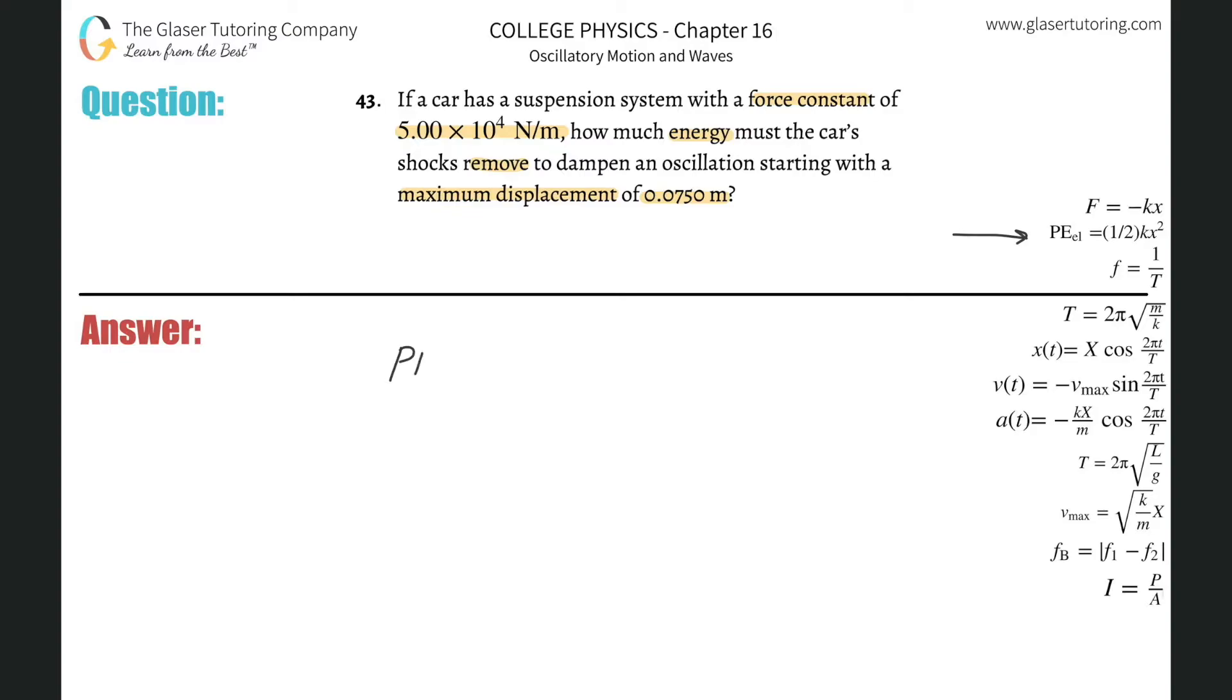it tells us that the potential energy, the elastic potential energy inherent in the spring, is equal to one-half multiplied by the force constant multiplied by its displacement from equilibrium squared.